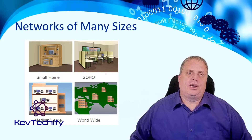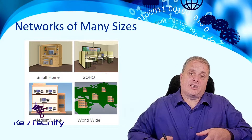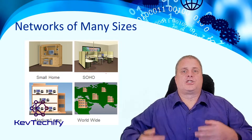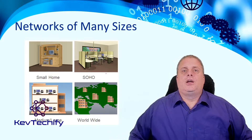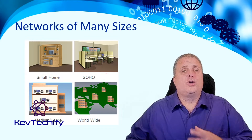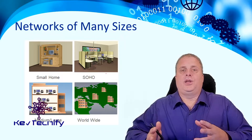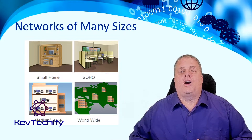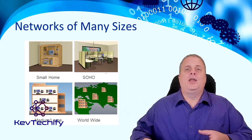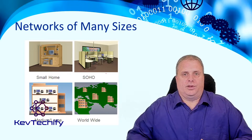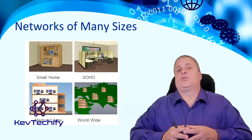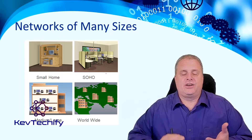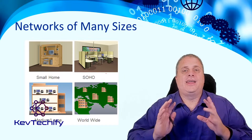The second type is the SOHO network — Small Office, Home Office. Maybe you're running a small business out of a room in your house, or maybe an executive goes home at night and needs access to company resources. We're looking at a little bit more added security and reliability than a small home network.